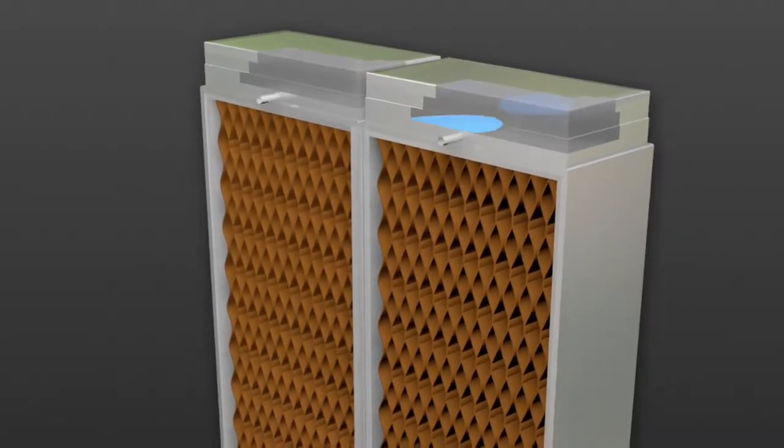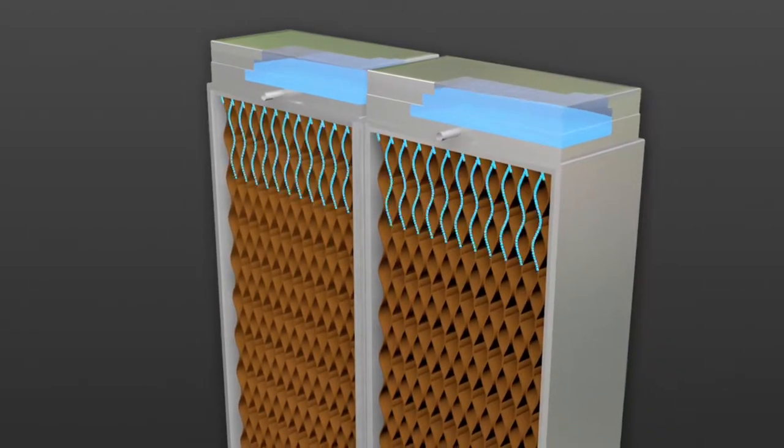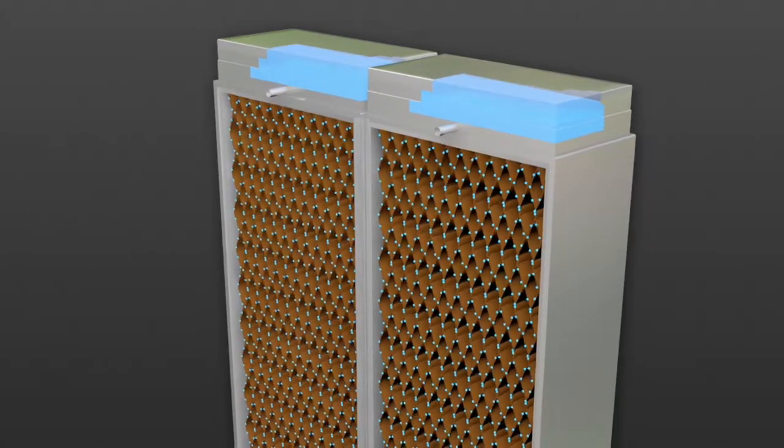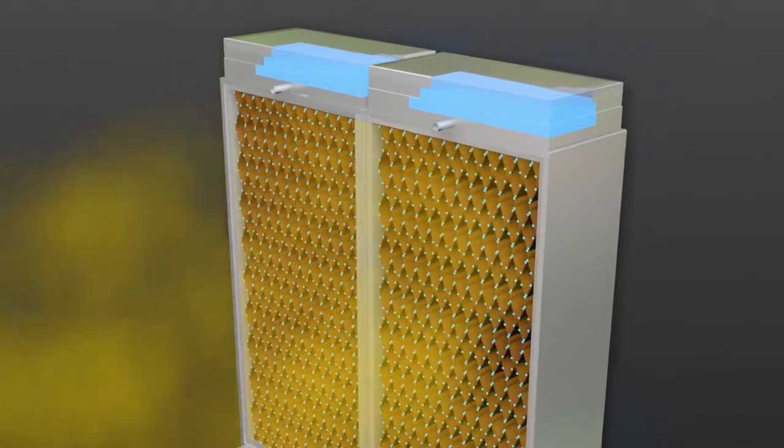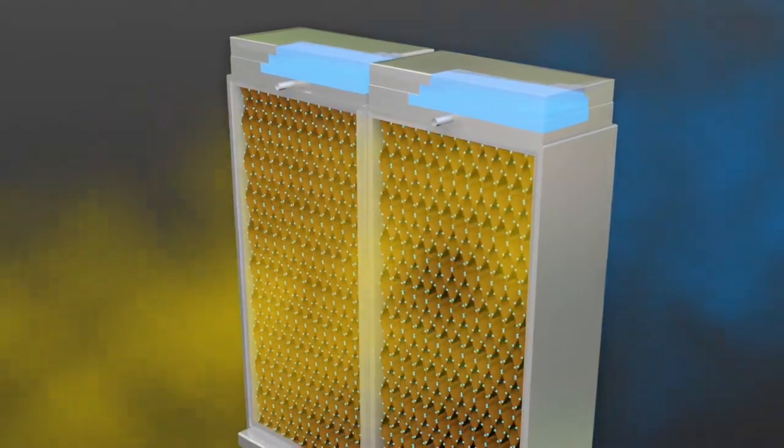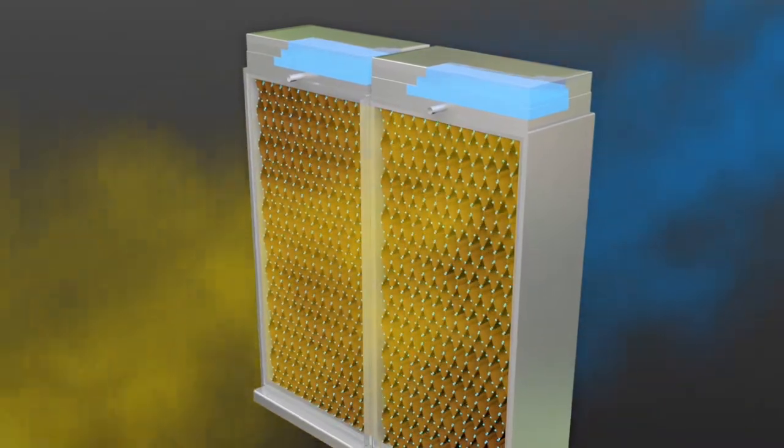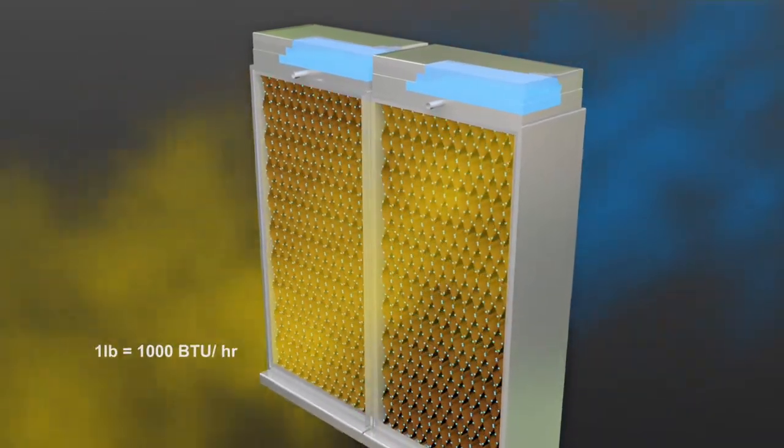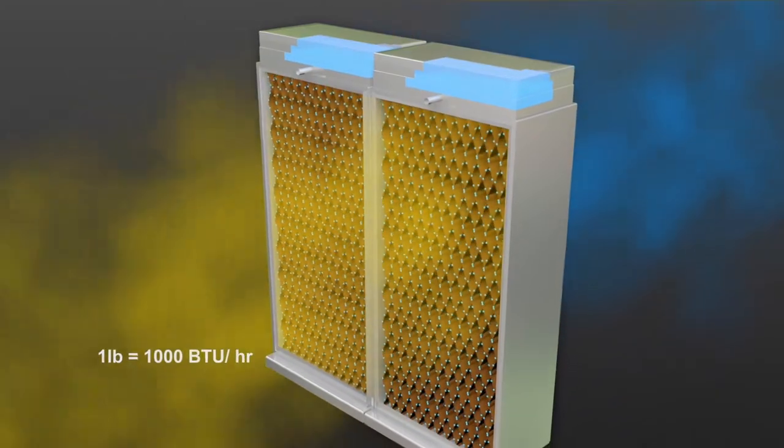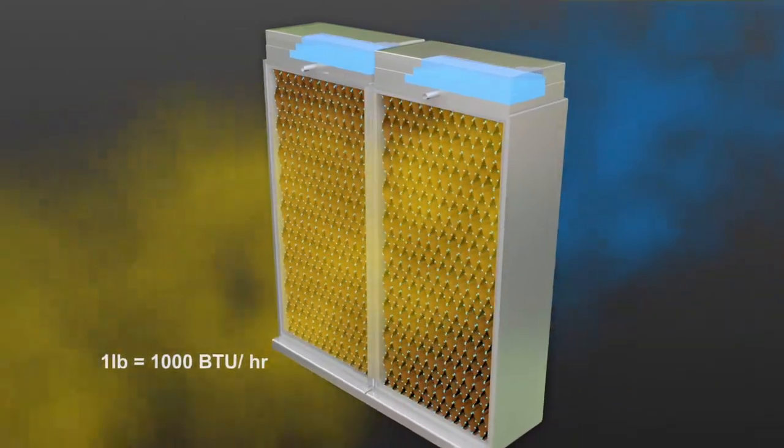For every pound of moisture delivered from an adiabatic humidifier, over 1,000 BTU per hour of evaporative air cooling is also achieved. For a data center using high volumes of outside air to cool an internal environment, this technique offers an economic way to increase the potential of free air cooling.